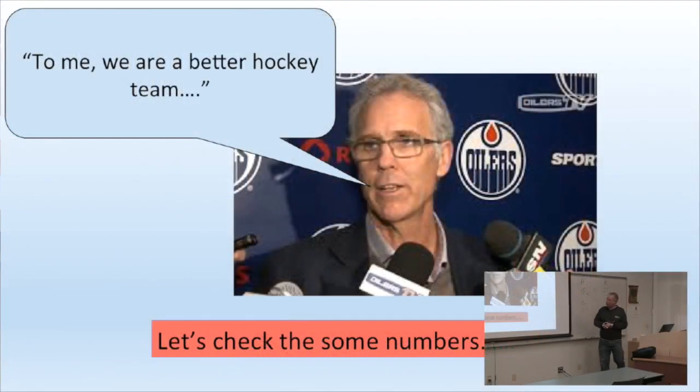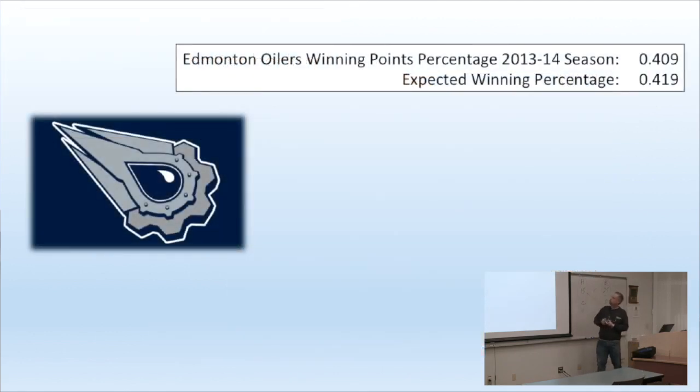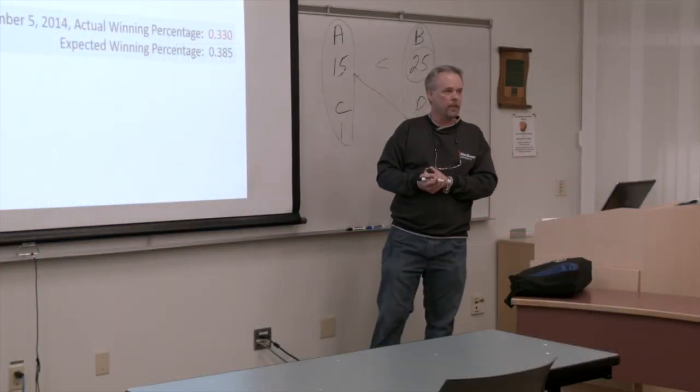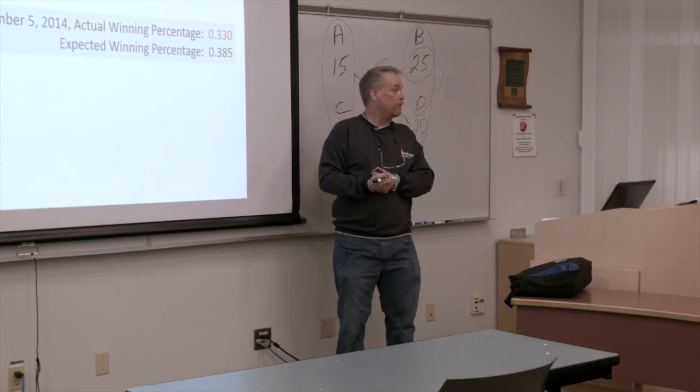We all remember this wonderful press conference that Craig McTavish gave on December 5th of last year where he said, to me anyway, we are a better hockey team. So let's look at what that means. Last year, how did we do? We won about 41% of the time or of the possible points available. The formula predicted that we'd get 42. So we're like a fraction of a game off. So now let's see how we did this year. At the time of the press conference, we're at 0.33, a little bit worse than last year. However, good news, we were expected to be 0.385. So yeah, we sucked. Not looking like we're doing better right there. So we're about half a point out. If you were to extend that to the whole season, we're about four wins short. That's not good. It's eight points.